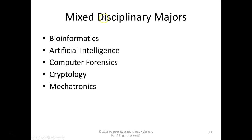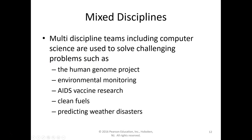There are also many mixed interdisciplinary majors, including bioinformatics, artificial intelligence, computer forensics, cryptology, and mechatronics. Bioinformatics brings together biology and informatics. AI is an interdisciplinary field combining machine learning, deep learning, robotics, psychology, and languages — a broad mix of disciplines all integrated in AI.